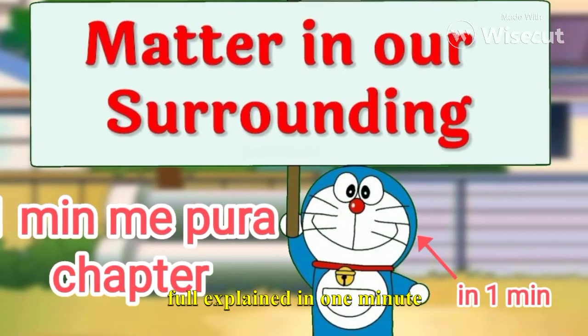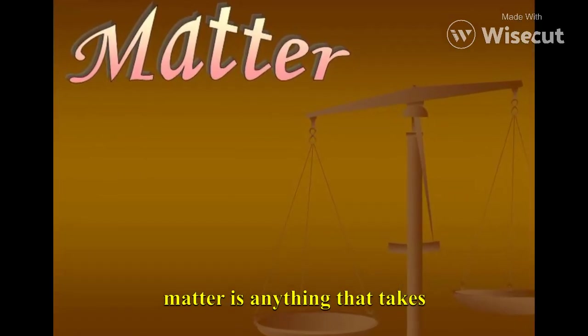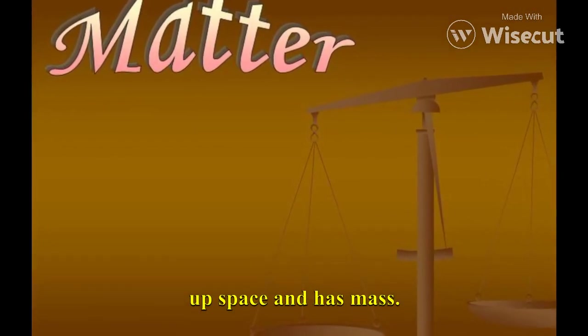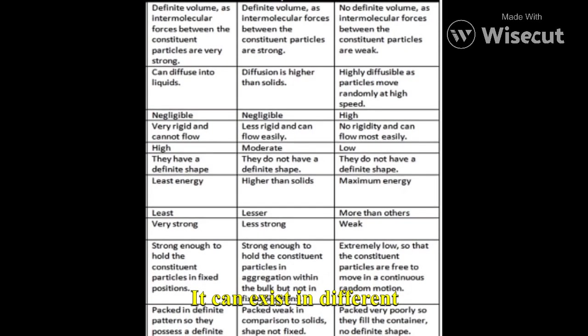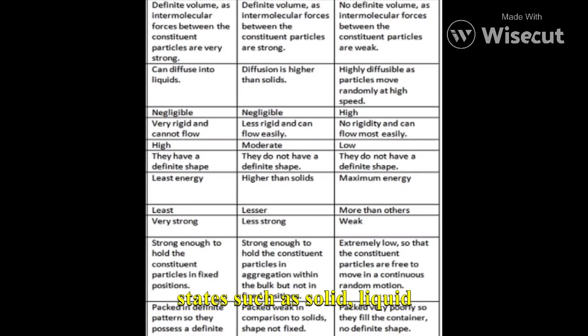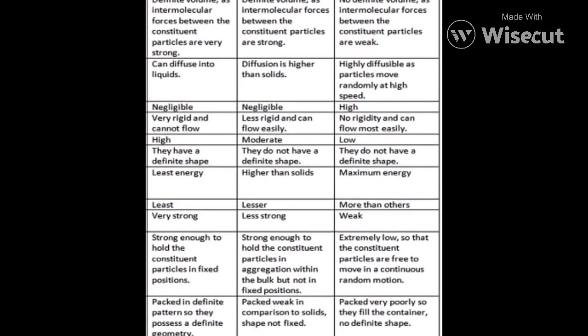Matter in our surrounding — fully explained in one minute. Matter is anything that takes up space and has mass. It can exist in different states, such as solid, liquid, and gas.